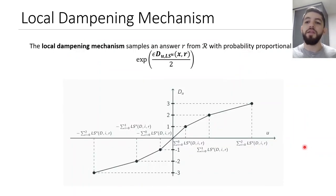Thus, we can define our local dampening mechanism that uses those notions of local sensitivity, and also it leverages them to build a more accurate mechanism. The local dampening mechanism samples an answer r from the range, with probability proportional to the exponential of epsilon, our privacy budget, times the dampened utility function.